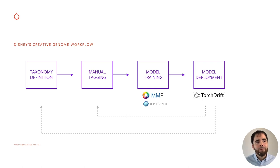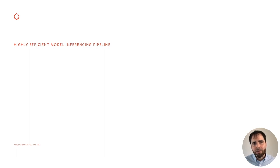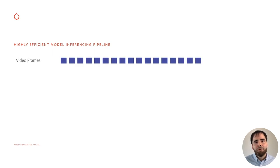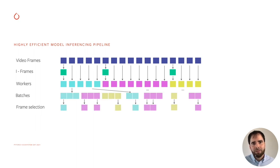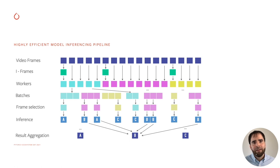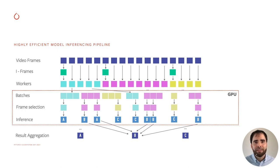Now let's focus on our inference pipeline. Given the volume and length of our content, we need to be highly efficient when we run inference across our archive. Our pipeline is end-to-end PyTorch-based and it works this way: given a video and its frames, we split the video in segments using the iframes as boundaries. The workers on the PyTorch data loader take care of loading the frames in batches. We process the batches to select content keyframes, which then go through the selected machine learning model. As a last step, the results may be aggregated with the inference results of other frames. The key advantage of this pipeline is that we move the content once to GPU and all is processed there, which is possible thanks to the PyTorch data loader and Cornea.